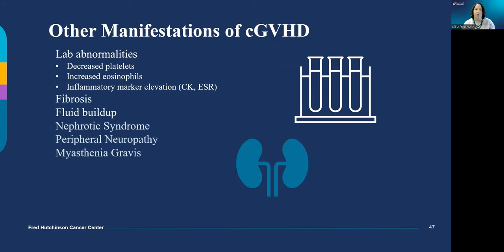Chronic graft-versus-host disease may also cause other lab changes and fluid buildup called serositis. There can be fibrosis — like the kind that causes skin tightening — that also happens in the esophagus and makes it hard to swallow. Nephrotic syndrome is a kidney condition that allows excess protein loss. Myasthenia gravis is a condition of neurological weakness and is a rare manifestation of graft-versus-host disease.